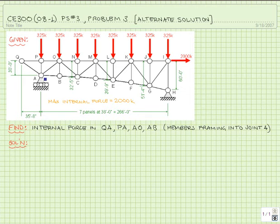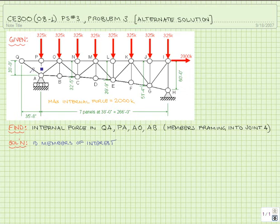In order to do so, let's identify our members of interest. That is the first step on our truss roadmap to victory. We can identify these members with just a couple of tick marks on the members themselves on the sketch.